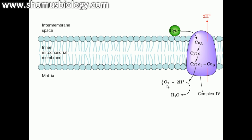Complex 4 reduces molecular oxygen to water. It contains 13 protein subunits, two cytochromes, and one copper site. It translocates two protons per two electrons and consumes two protons from the matrix, generating one molecule of water from half a molecule of oxygen.